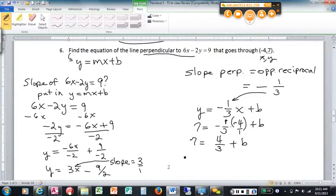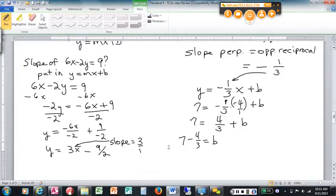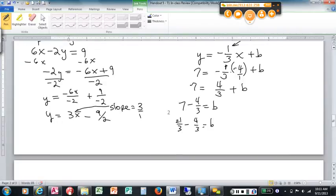And so subtract the 4 3rds, b is going to be 7 minus 4 3rds, which is 21 3rds minus 4 3rds. One way we could calculate that. Get a common denominator. 17 3rds is b. So y equals negative 1 3rd, that's my m, x plus b, b is 17 3rds.